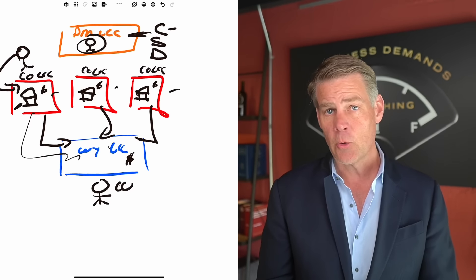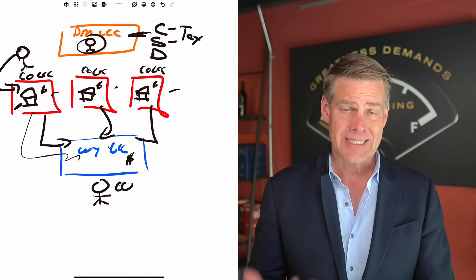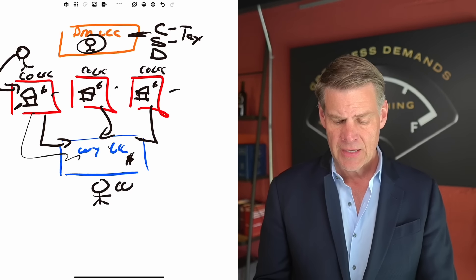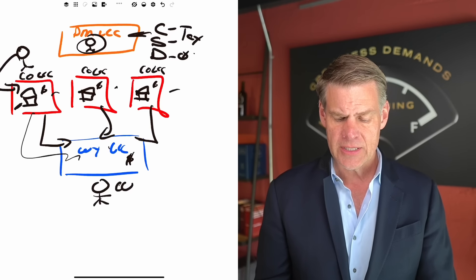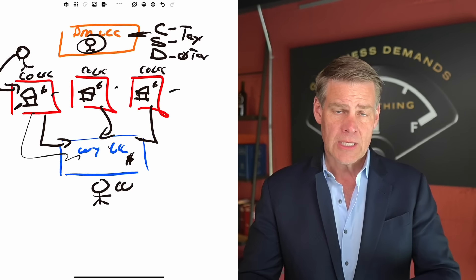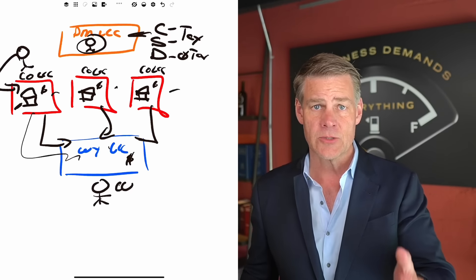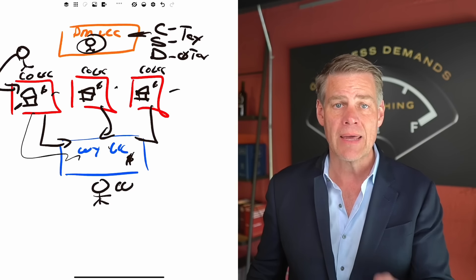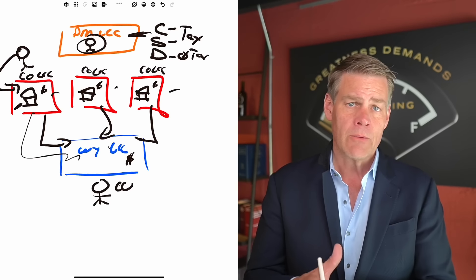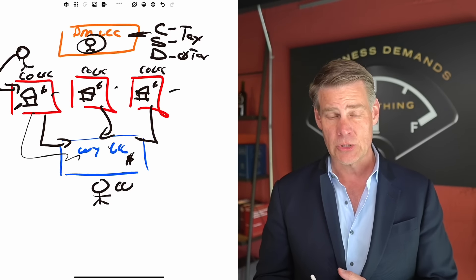If you set it up as a C-corp or S-corp, you're going to have to file a tax return — an 1120 for a C-corp and an 1120S for an S-corp. A disregarded entity requires no tax return. When I'm working with someone that has a rental portfolio — maybe a smaller one, just starting out — we'll go through the business aspects of why they should set up a property management entity. Then when it comes to the tax election, I analyze how much net income we have coming off these properties and how much we could move into the corporation.